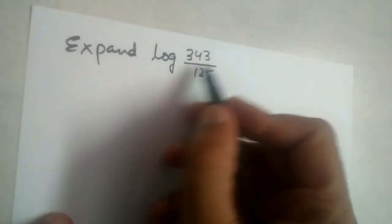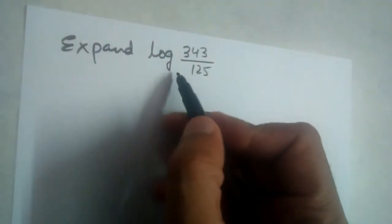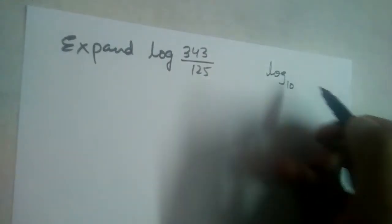Expand log 343 divided by 125. There is no base given here. When the base is not given, base 10 is assumed.